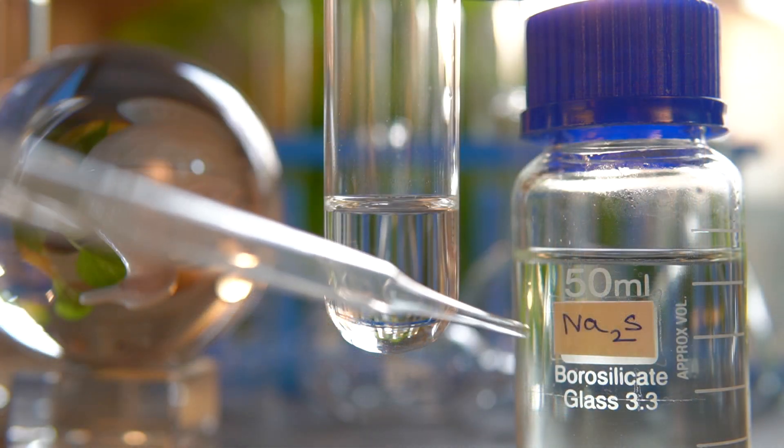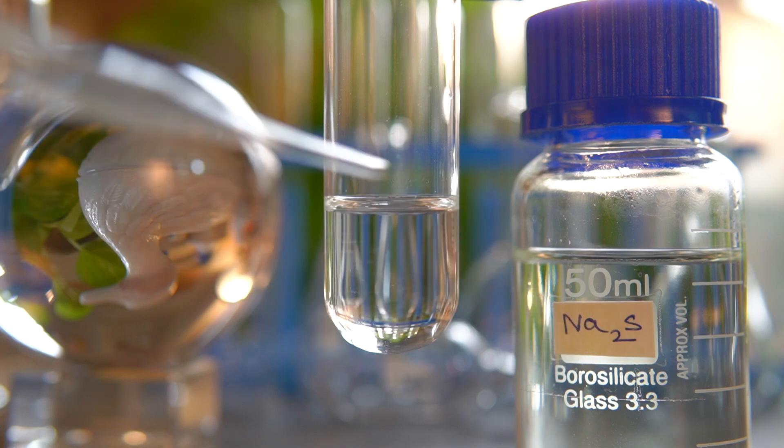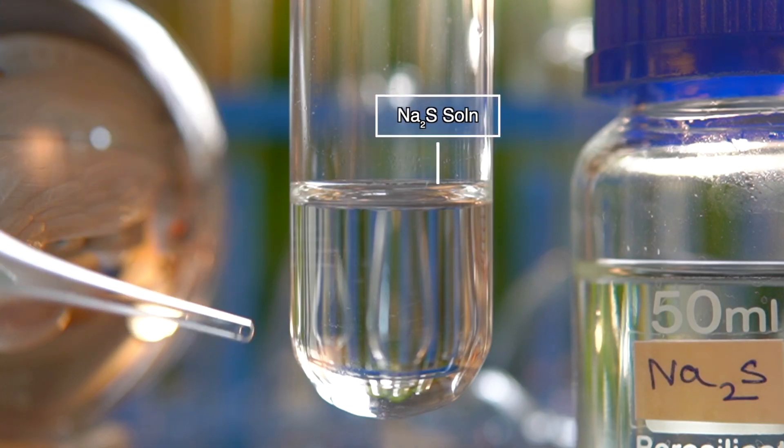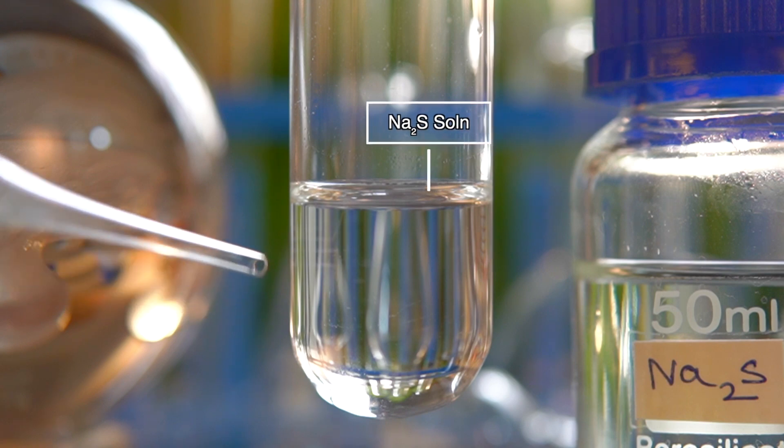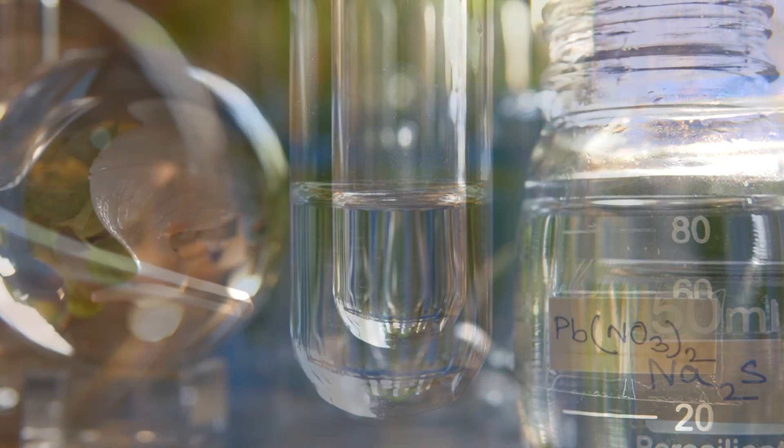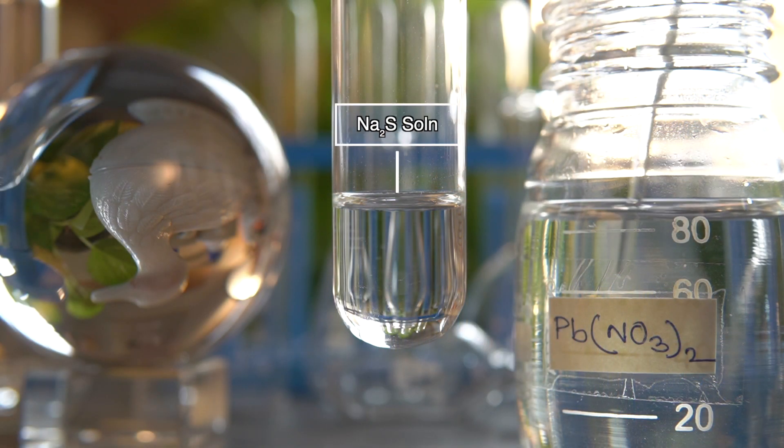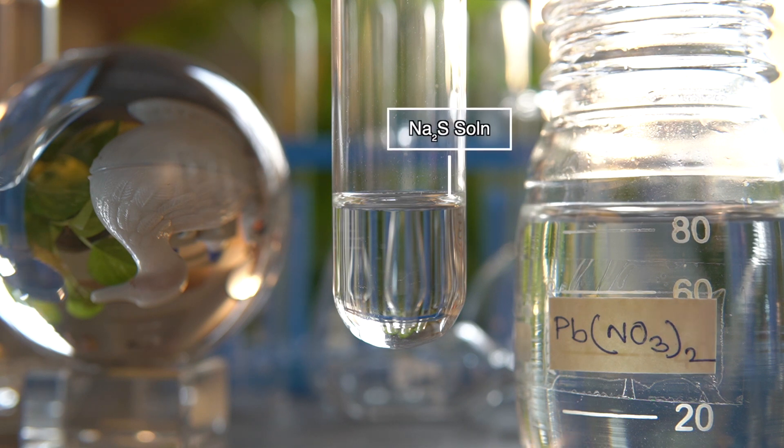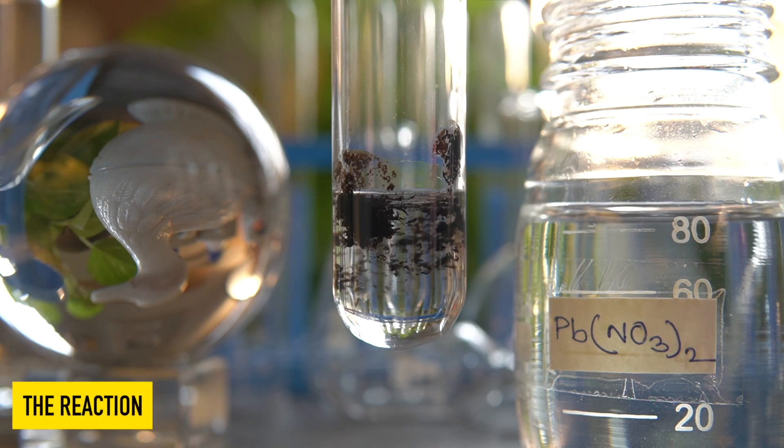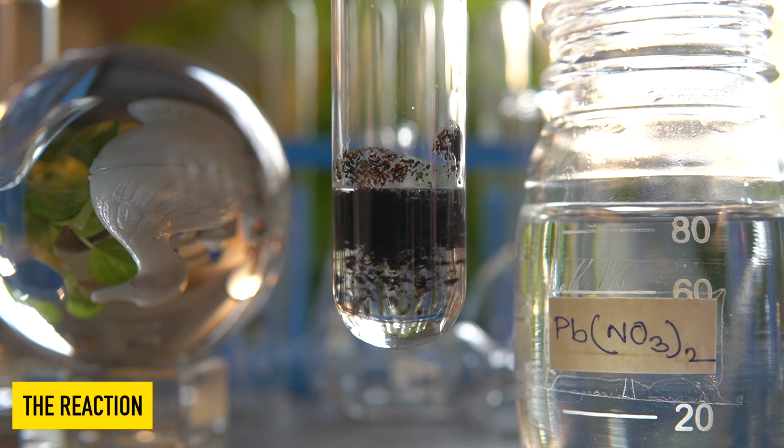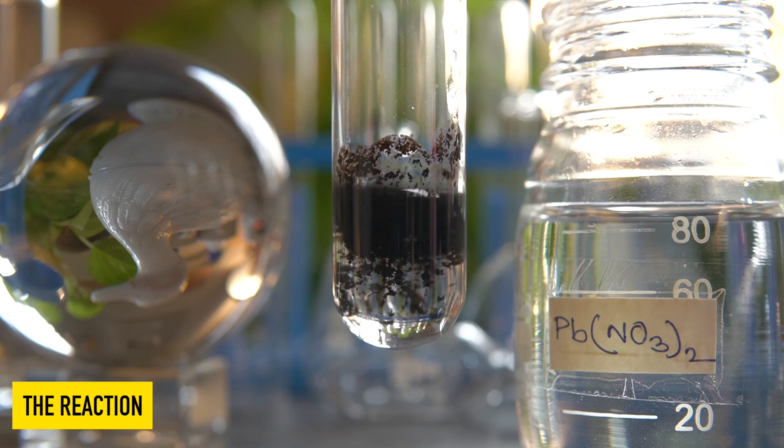Now to initiate the chemical reaction, we will take some amount of clear solution of sodium sulphide into this test tube. Now we will add a clear solution of lead nitrate into the sodium sulphide solution drop wise and observe the effects.